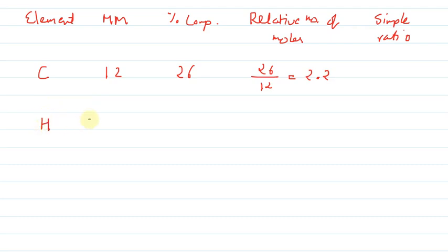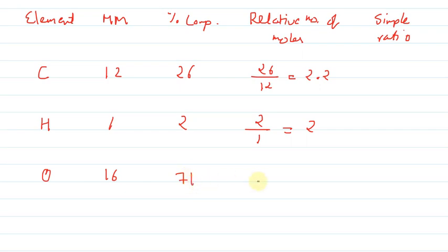The second element is hydrogen, whose molar mass is 1 and percentage composition is 2. The relative number of moles is 2 upon 1, which is nearly equal to 2. The third element is oxygen, whose molar mass is 16 and percentage composition is 71. When we calculate 71 upon 16, it comes out to nearly 4.4 as the relative number of moles.